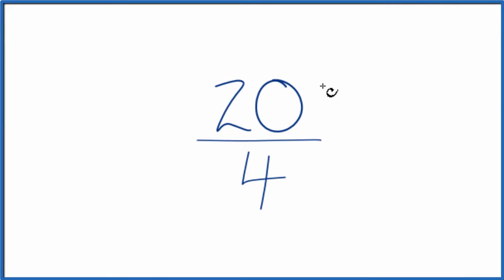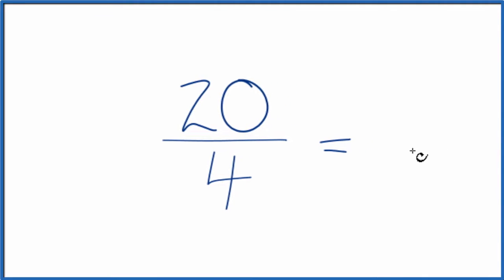If you need to simplify the fraction 20 over 4, here's how you can do that. What we're looking for is another fraction that's equal to 20 over 4. It's an equivalent fraction, we've just simplified or reduced it down to lowest terms.